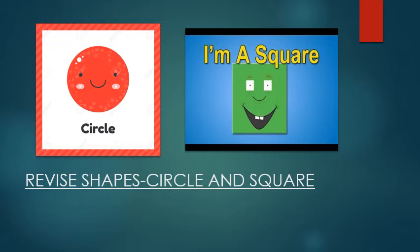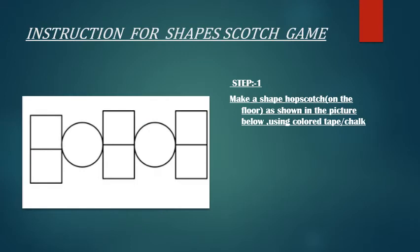We are going to make our hopscotch using these two shapes. So let's see how we can play this game. What we have to do is make this hopscotch on the floor as shown in this picture below using color tape or chalk. You have to make this shape scotch on the floor.